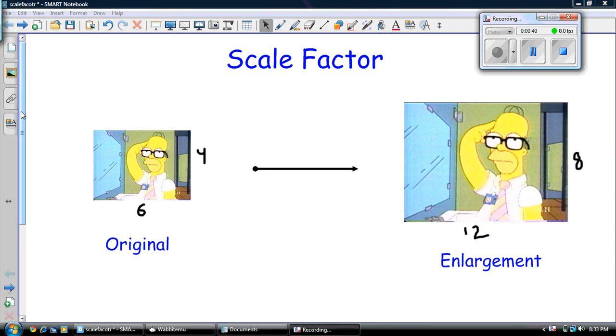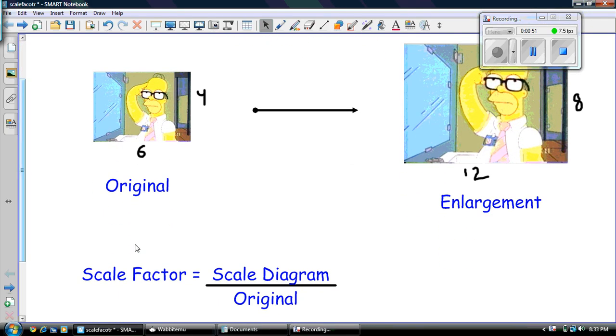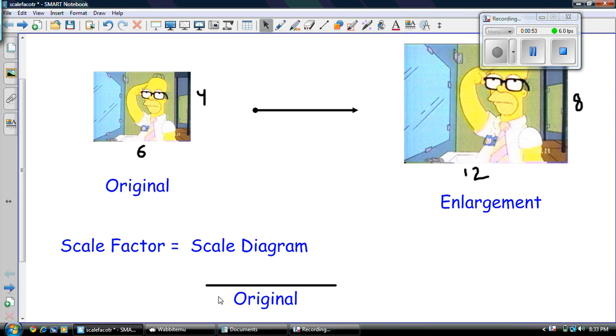Well, there's a formula that we can use and this works in any situation. Most of you guys might be able to see what number you have to multiply six by to get 12. You guys can probably figure that out. But if you can't see it, there's a formula that we can use and the formula is that the scale factor is equal to the scale diagram, so our scale diagram in this case is the enlargement, divided by the original.